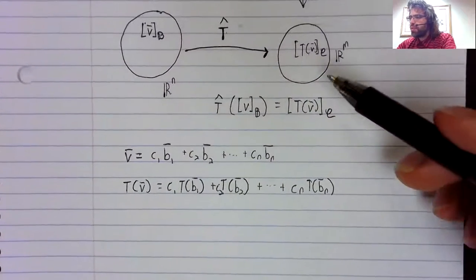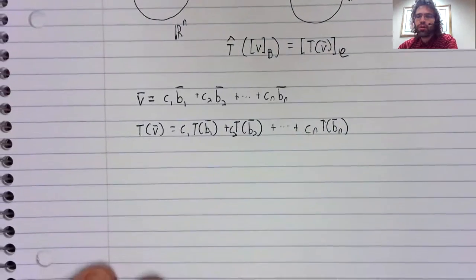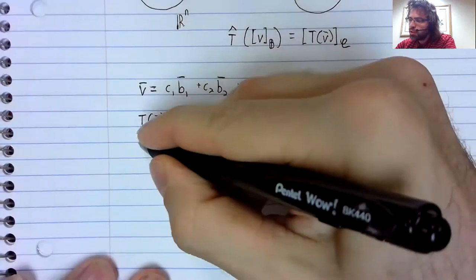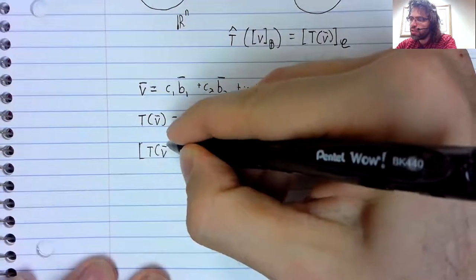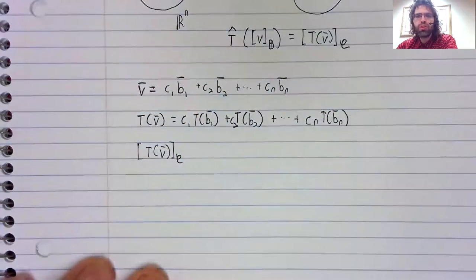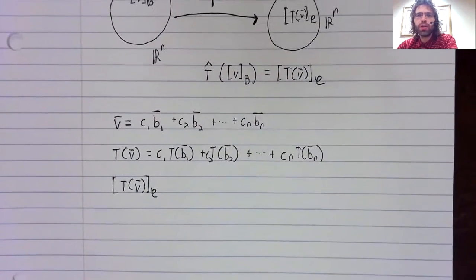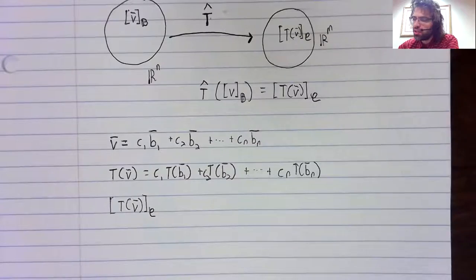Now we're interested in this coordinate vector. So let's take the coordinate mapping of both sides of this equality. That will get us this thing we're interested in.